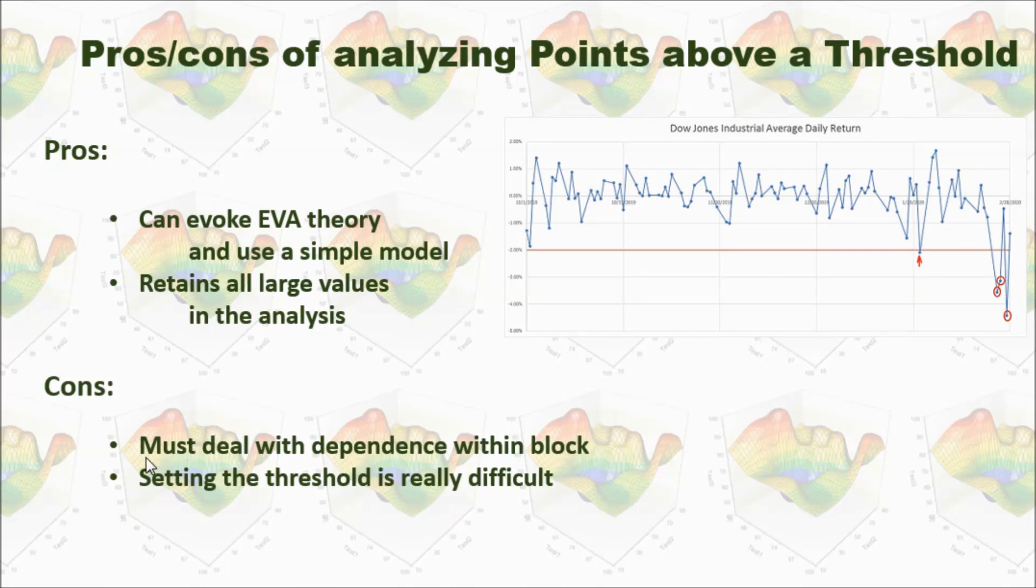But in the same time, it must deal with dependence within block. You can see because we have dependency inside this block, in this case, if we set threshold as negative 2%, we pick up all the four values. They all belong to this specific month.